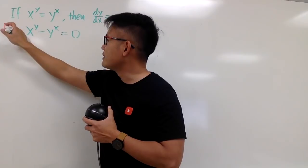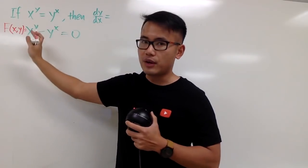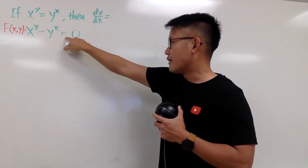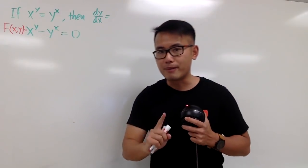I will write this down as capital F, with x and y to be the input. This right here is the function, and we have this is equal to 0, that's what we call the level set, level curve, but don't let that bother you for now.